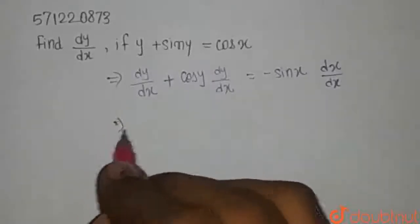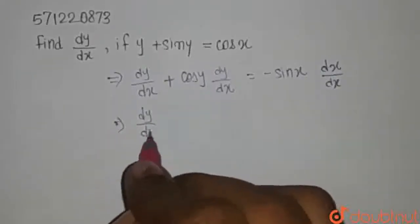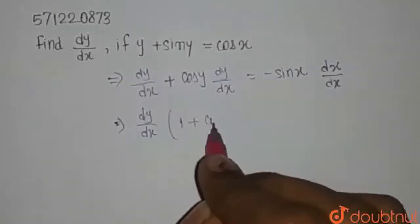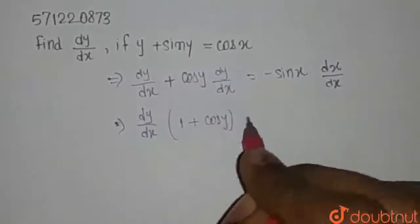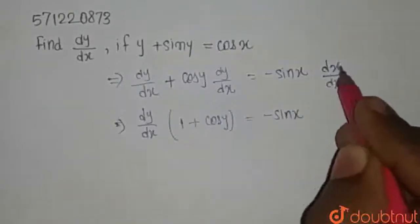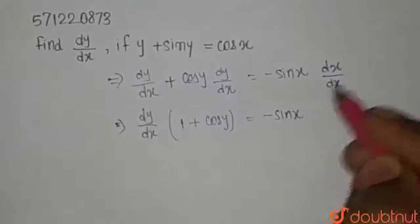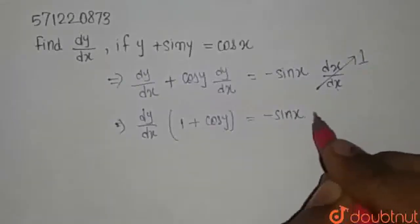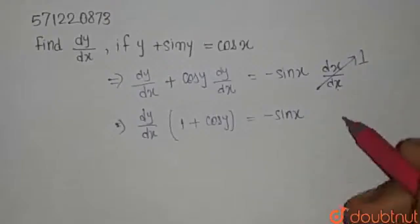Now, let's take dy by dx as common. So, here we are going to get 1 plus cos y and it is minus sin x and differentiation of x with respect to x, it is going to be 1. So it is 1, no need to write this.